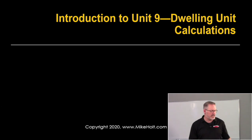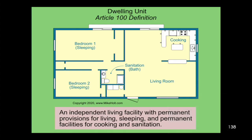Now let's look at dwelling unit calculations. First, we need to define what a dwelling is — an independent living facility with permanent provisions for living, sleeping, cooking, and sanitation. So a dwelling unit has bedrooms for sleeping, a bathroom for sanitation, a kitchen for cooking, and a living room.